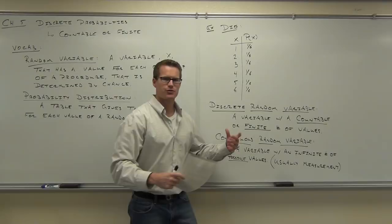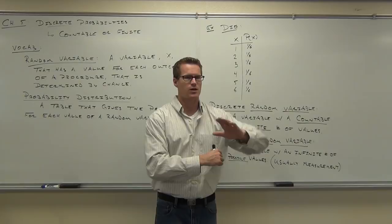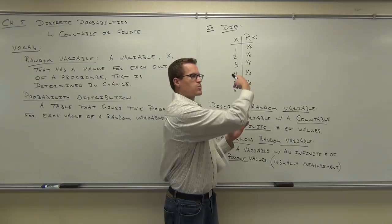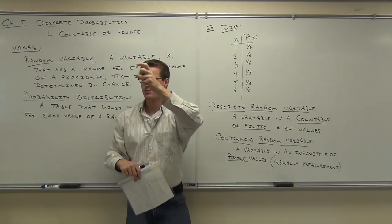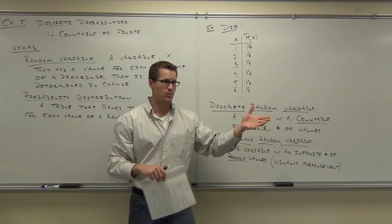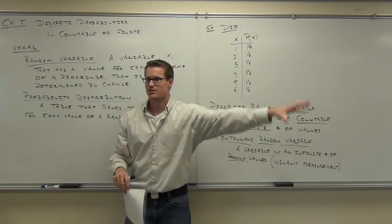Discrete means countable and finite. Continuous means an infinite number of possible values — such as measurements like volume or height — where you can always find a number between two values. Compare that to rolling a die: can you get a number between 1 and 2? No, not unless 1.7 is listed on the die. So there's not an infinite number of values — there's only six. In chapter 5, we're in discrete random variable land. Continuous random variables come in chapter 6.